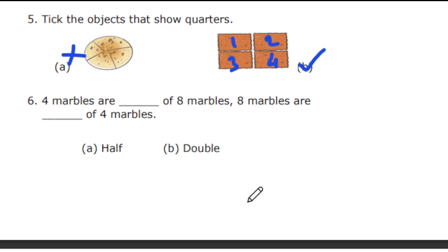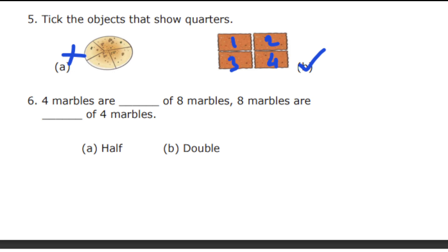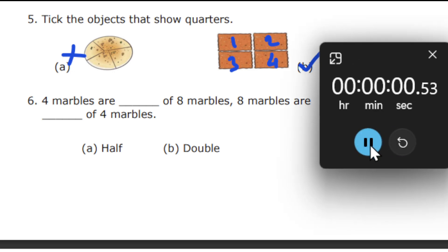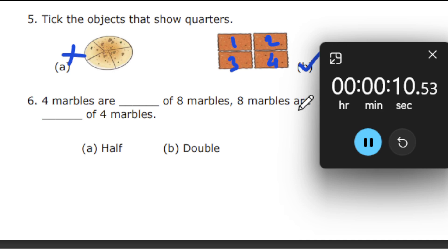Next question: four marbles are dash of eight marbles, and eight marbles are dash of four marbles. The options given are half and double — you need to place the correct option.